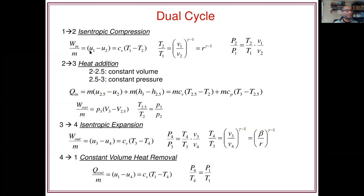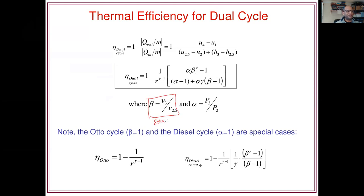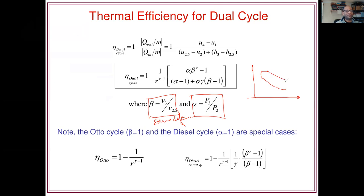For the Dual cycle, when we consider all five processes, we find it has a particular thermal efficiency which is a function of R — the geometric compression or expansion ratio — and gamma (same as K in this context). It has beta, the cutoff ratio, with the same definition as for the Diesel cycle. And it has alpha, which is a new ratio describing how much the pressure increases through the constant volume part of the cycle. So we have a constant volume and then constant pressure heat addition, followed by the expansion.